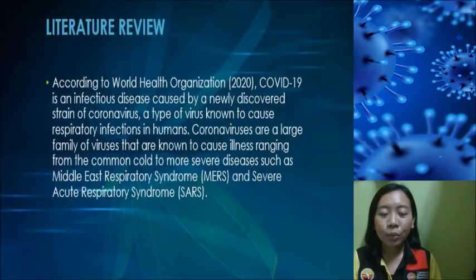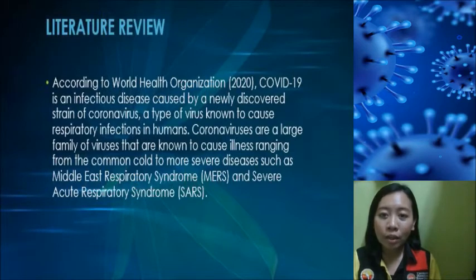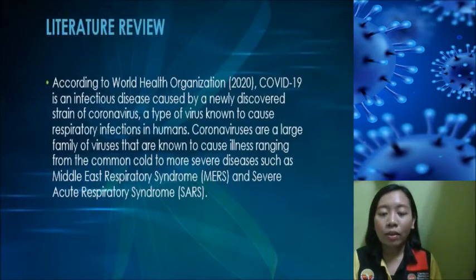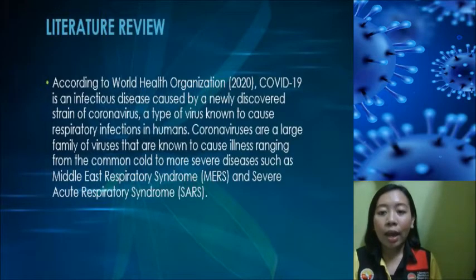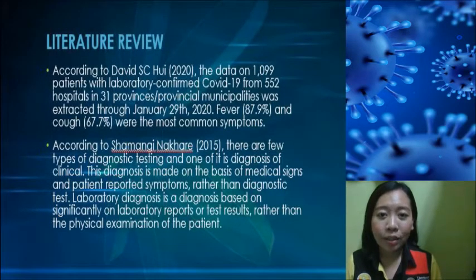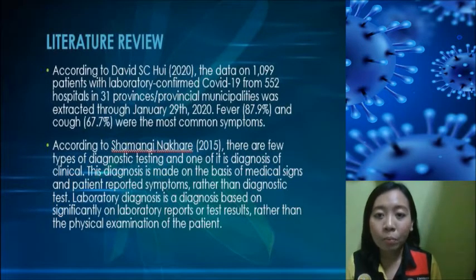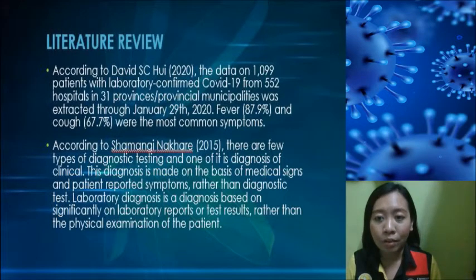For the literature review, according to the World Health Organization in 2020, COVID-19 is an infectious disease caused by a newly discovered strain of coronavirus — a type of virus known to cause respiratory infections in humans. Coronaviruses are a large family of viruses known to cause illness ranging from the common cold to more severe diseases such as Middle East Respiratory Syndrome (MERS) and Severe Acute Respiratory Syndrome (SARS). According to David S. C. Huy in 2020,